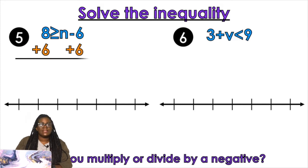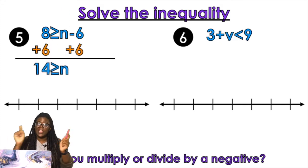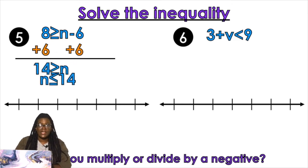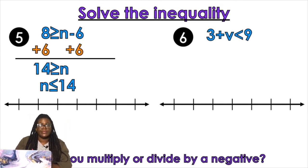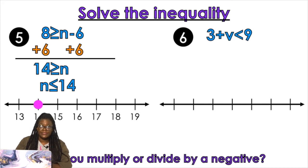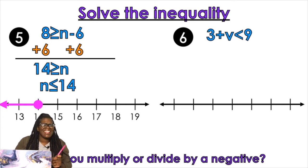Plus six, plus six. 14 is greater than N, but N is flipped, right? So you have to make sure you flip it around: N is less than or equal to 14. Remember — move the variable, flip the symbol, move the number. Here's our number line. Find 14. Closed circle because there's an equal to there, and we're going to go to the left.